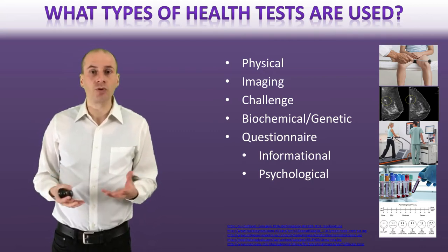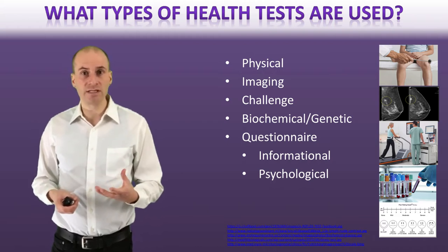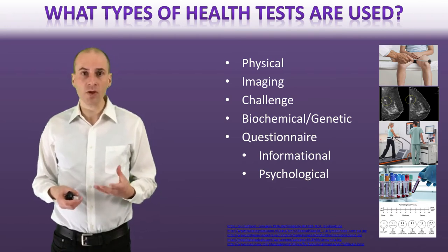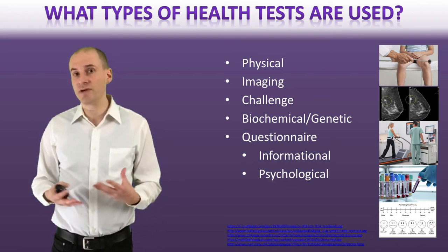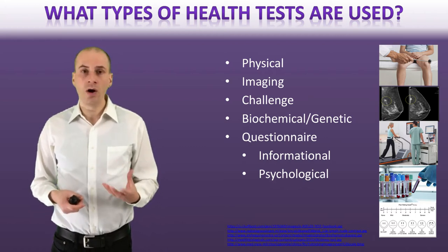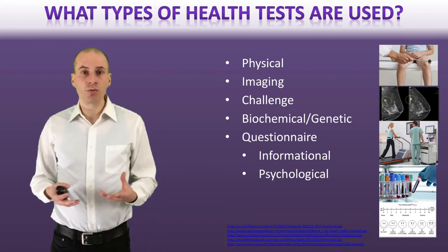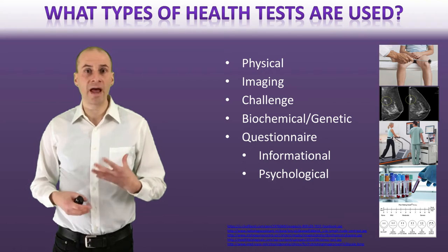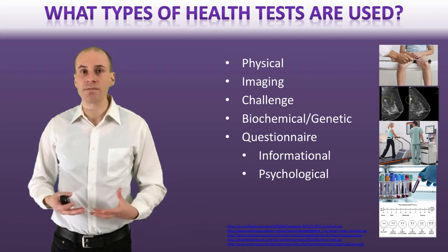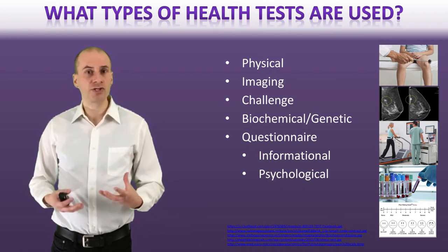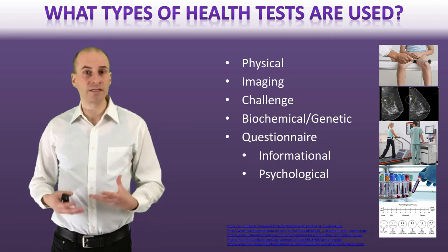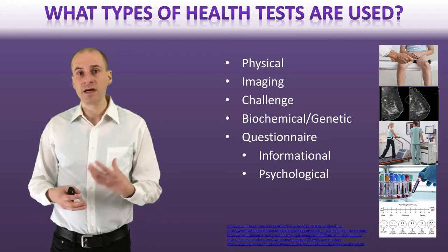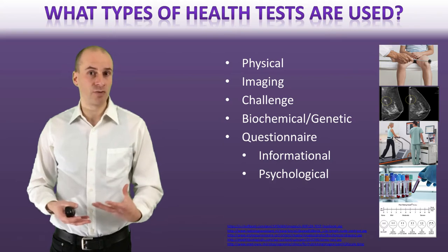There are also tests that ask people questions. These could be informational questions, such as: do you have a family history of this disease — did your parents have heart disease, for example? Or it could be information about whether you're exposed to different types of occupational risks. Or it could be something more psychological — asking people to answer questions about their psychological states, such as whether they're having a lot of disturbed sleep, stress, or feeling depressed. These questionnaires can serve as a way of measuring things that suggest whether someone might be at greater risk for disease.